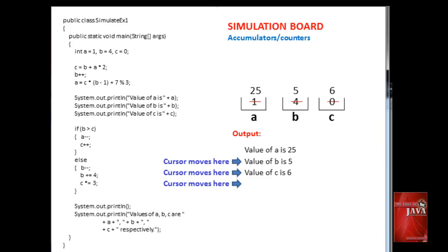The if statement evaluates if b is greater than c. We know that the current value of b is 5 and c has a value of 6. Therefore, the evaluation has a false result, bypassing the statements underneath the if statement. Instead, the block statements underneath the else statement are executed.